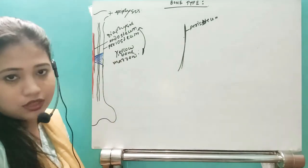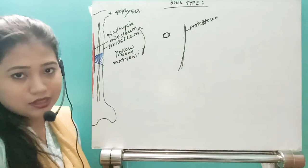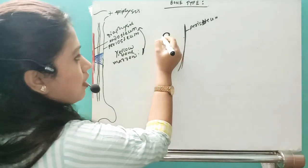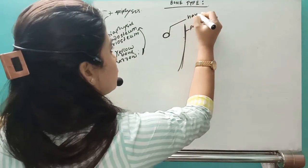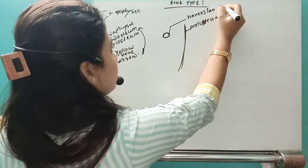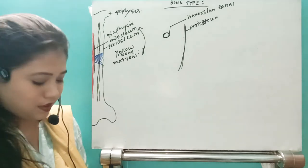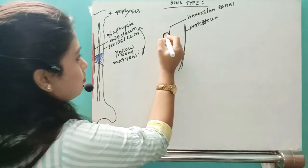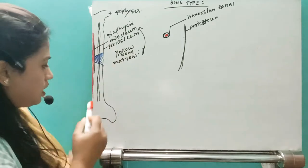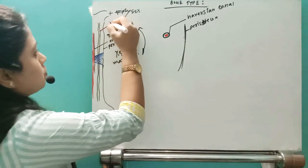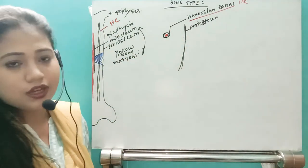Whenever we have a cross-section, that longitudinal tunnel will appear as a circular opening. This tunnel is known as the Haversian Canal — inside which we have the blood vessels. For your easy understanding, this is the Haversian Canal. Whenever we have a cross-section of the bone, the Haversian Canal will appear like a circular hole.